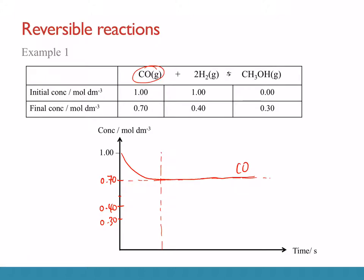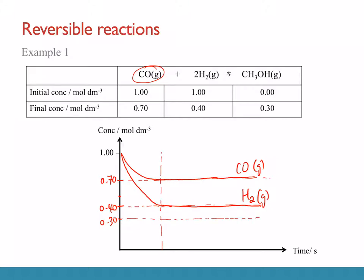All reactants and all products should reach equilibrium at the same point in time — equilibrium is achieved when the rate of forward equals the rate of backward reaction, so when it's achieved by one it's achieved by all. For H₂, it starts at 1 and ends at 0.4 — draw another dotted line and a curve down to that exact spot. This is the H₂ curve. Next, CH₃OH starts at zero and increases by 0.3.